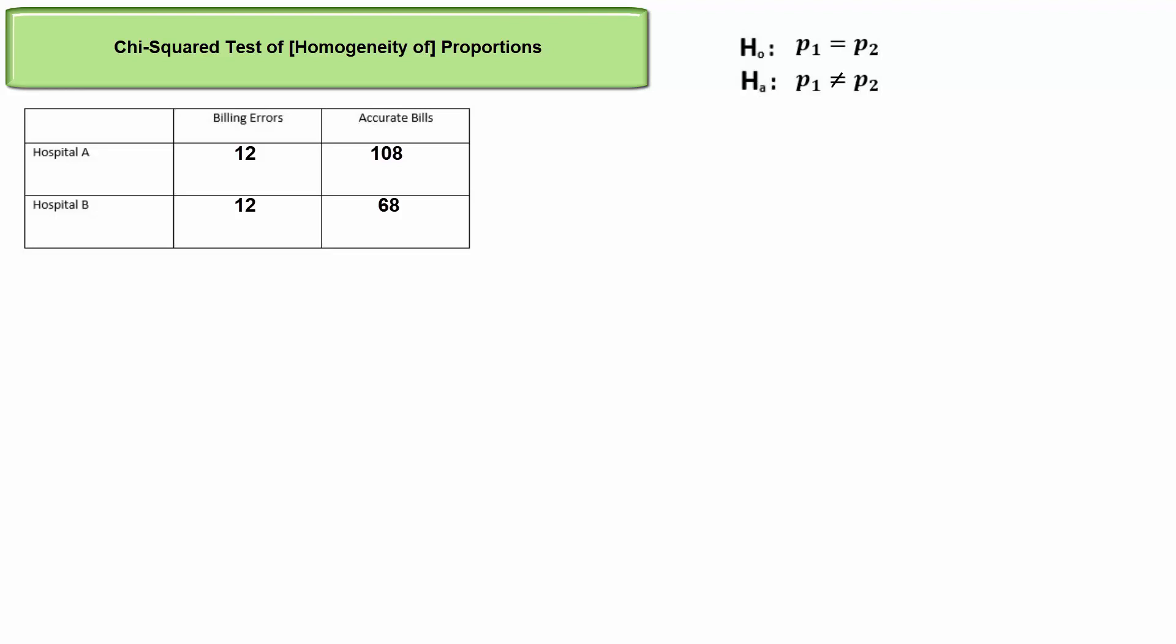A chi-square test of proportions allows us to test multiple population proportions simultaneously to see if they're all equal. But I want you to make another important connection to a previous test. So we're looking at this simple case of just two populations, two hospitals.